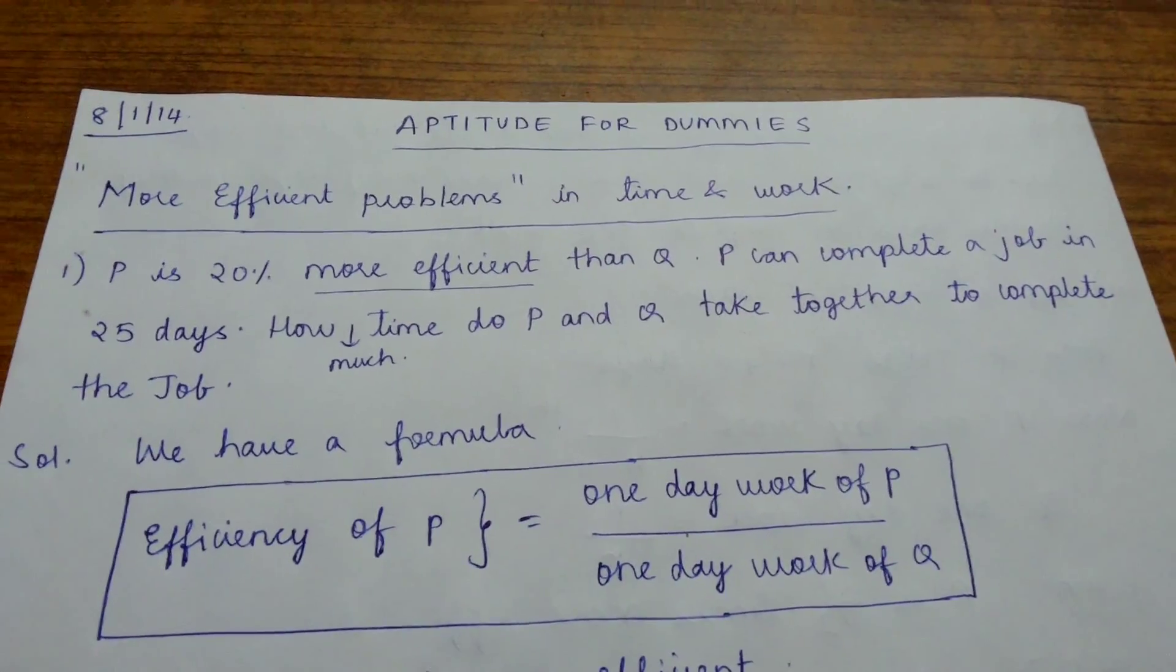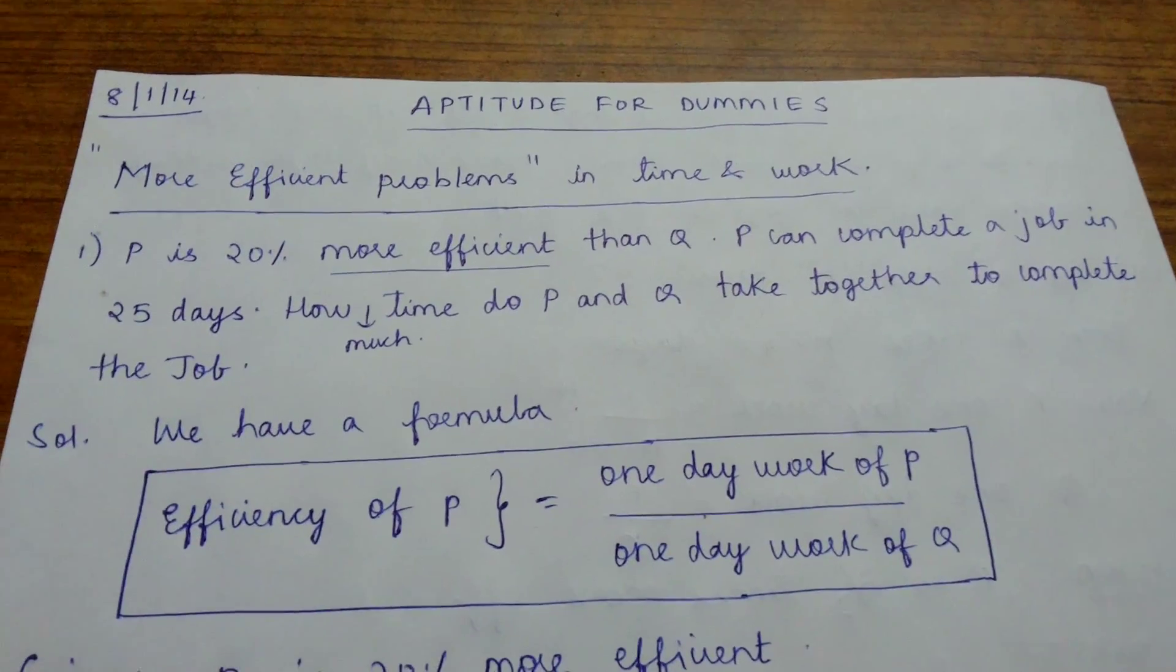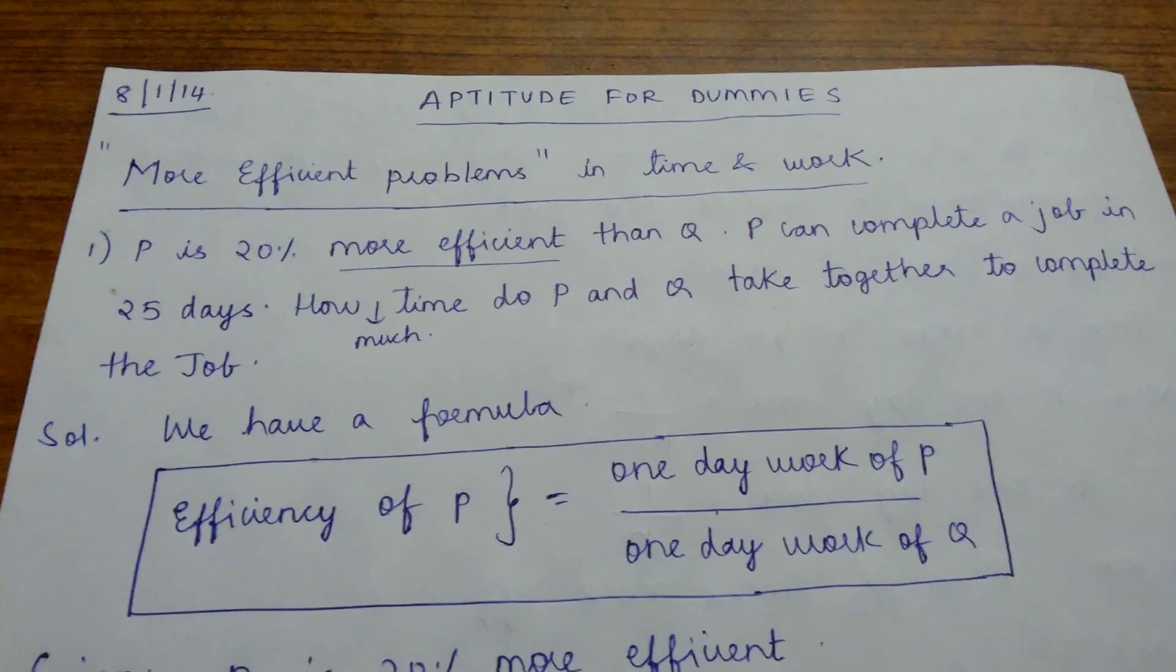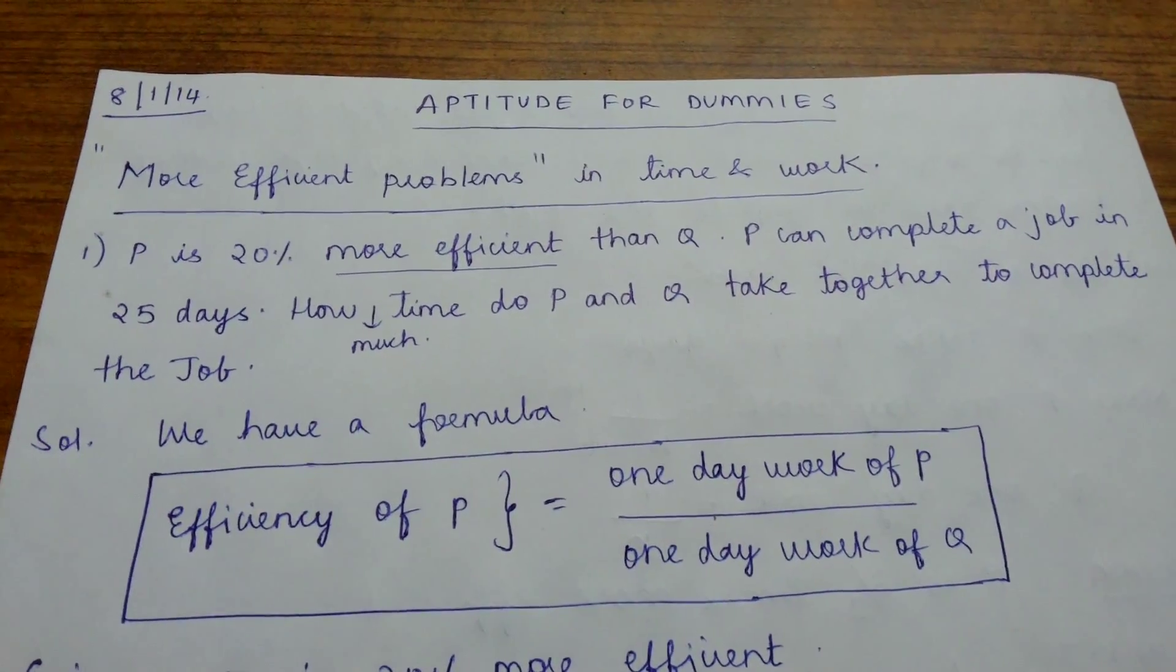In this first question, we can see that P is 20% more efficient than Q. P can complete a job in 25 days. How much time do P and Q take together to complete the job?